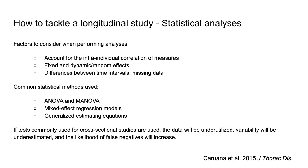Commonly applied statistical approaches include: one, univariate and multivariate repeated measure ANOVAs — noting the assumption of equal interval spacing and normal distribution in all groups, and that only means are compared, sacrificing individual-specific data. Two, mixed-effect regression models focus specifically on individual change over time, accounting for variation in the timing of repeated measures and for missing or unequal data instances. Three, generalized estimating equation models that rely on the independence of individuals within the population to focus primarily on regression data. Some of these will be discussed later in the lecture.